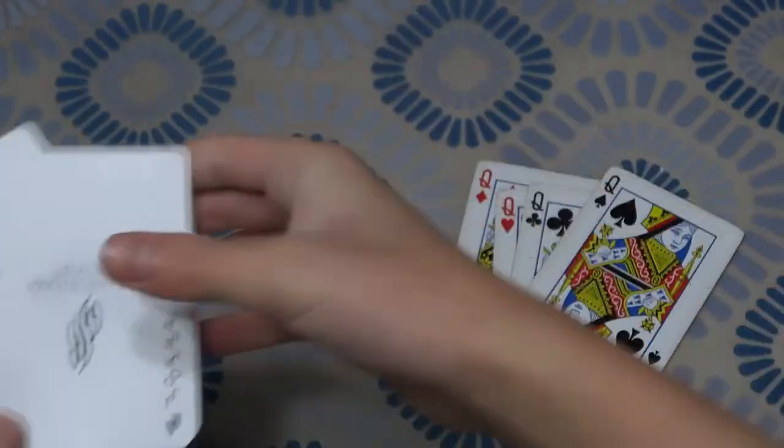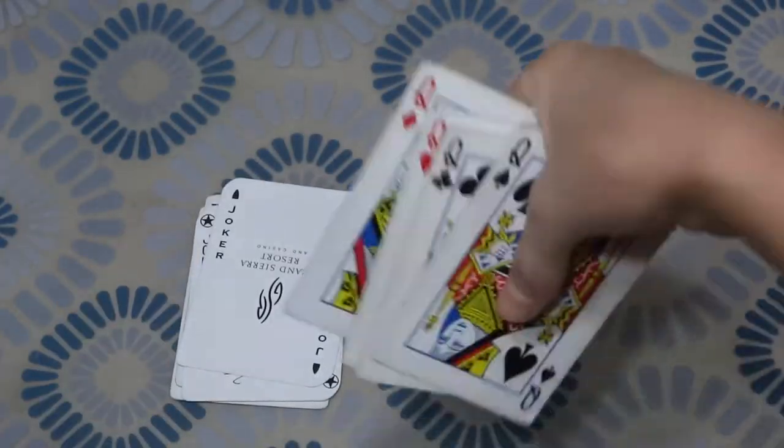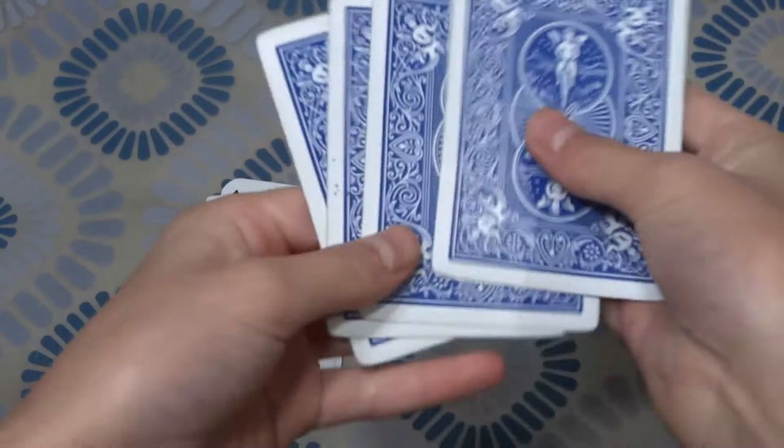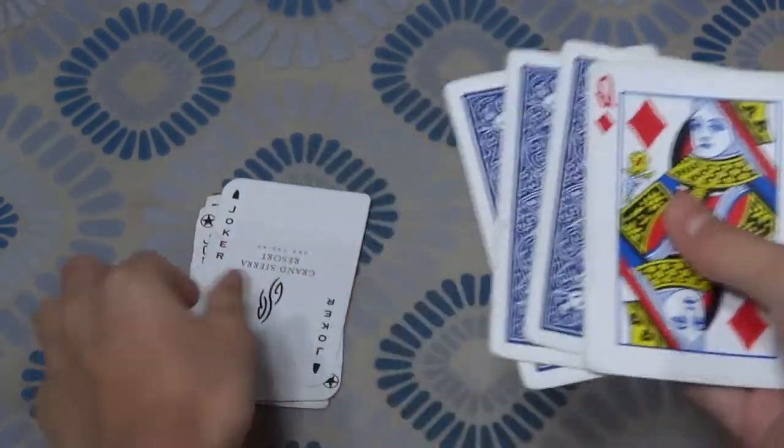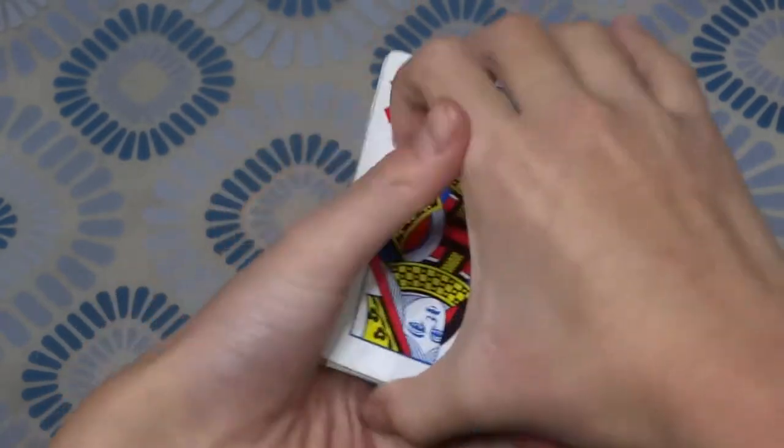So then how I set it up is I set it up like this. And then I took the Queens, I flip them over. And I take the bottom Queen and flip it over. So then you can combine them together and then turn it over.